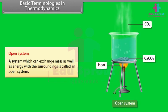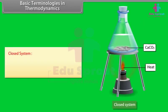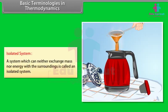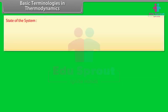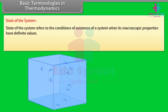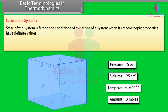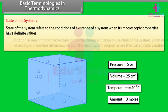A system which can exchange mass as well as energy with the surroundings is called an open system. A system which can exchange energy with the surroundings but not mass is called a closed system. A system which can neither exchange mass nor energy with the surroundings is called an isolated system. The state of the system refers to the conditions of existence of a system when its macroscopic properties have definite values. For example, the state of a gaseous system can be defined by its pressure, volume, temperature, and amount.